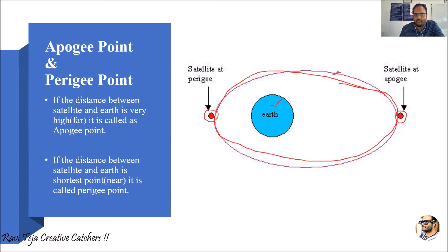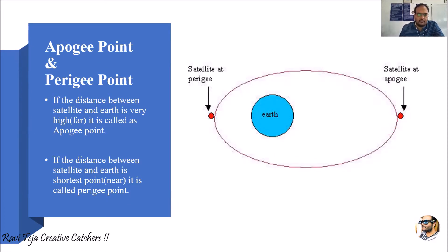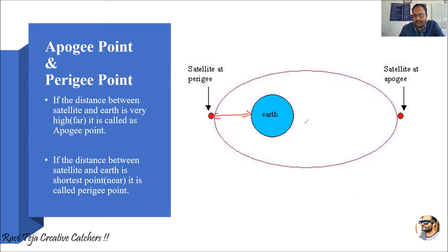There will be hundreds of satellites moving around the earth. As they move in the elliptical orbit, few satellites will be coming nearer to the earth at some period of time, and the remaining satellites will be moving away from the earth at some point of time. As you can see, this particular satellite's distance from the earth is very very small.